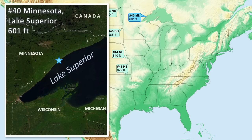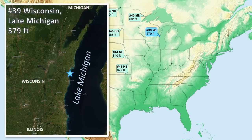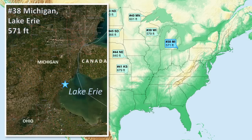Number 40 is Minnesota — the first of three state low points that fall along shorelines of the Great Lakes. The entire shoreline of Lake Superior along Minnesota counts as a low point. Number 39 is Wisconsin, on the Lake Michigan shoreline. Number 38 is Michigan, on the Lake Erie shoreline.